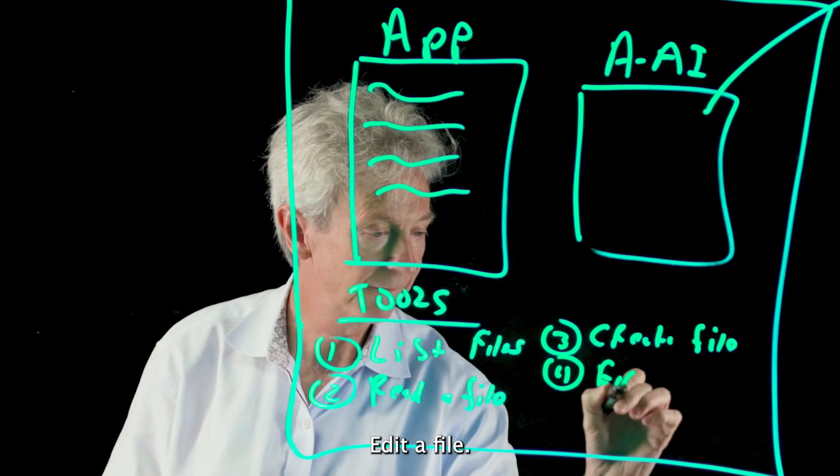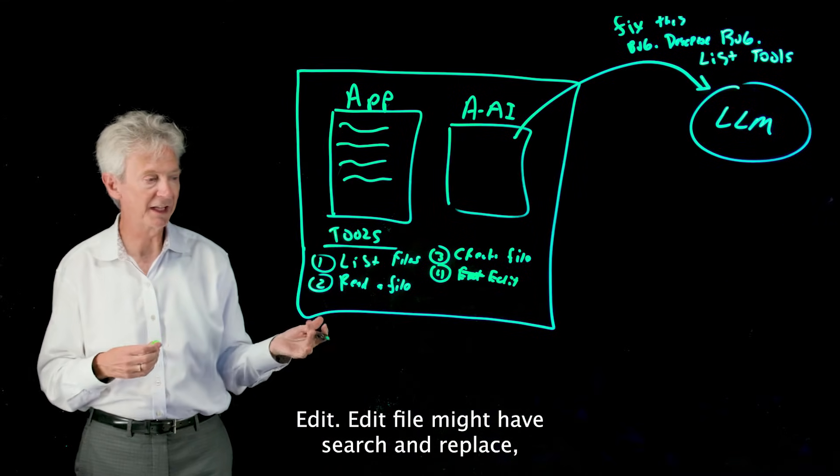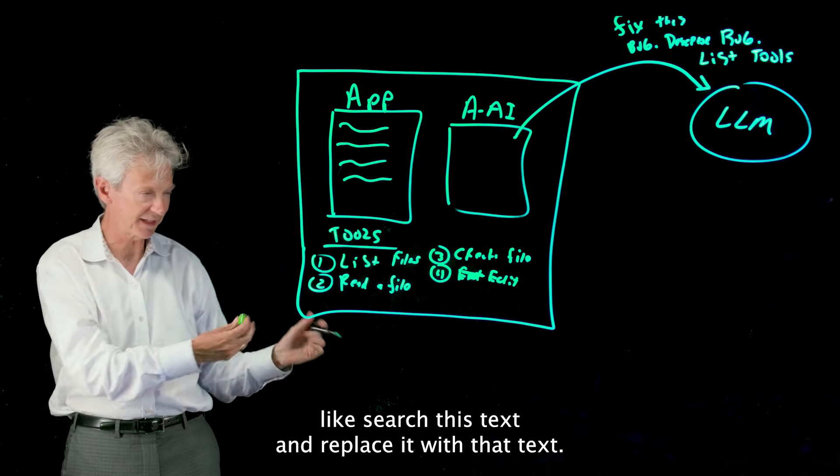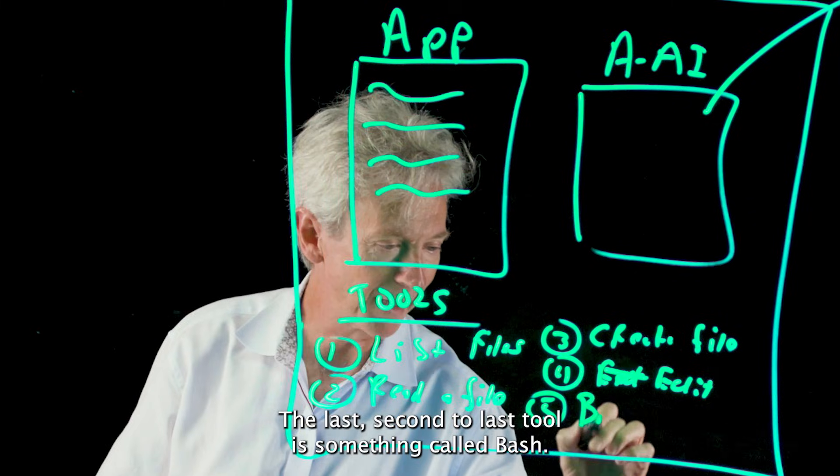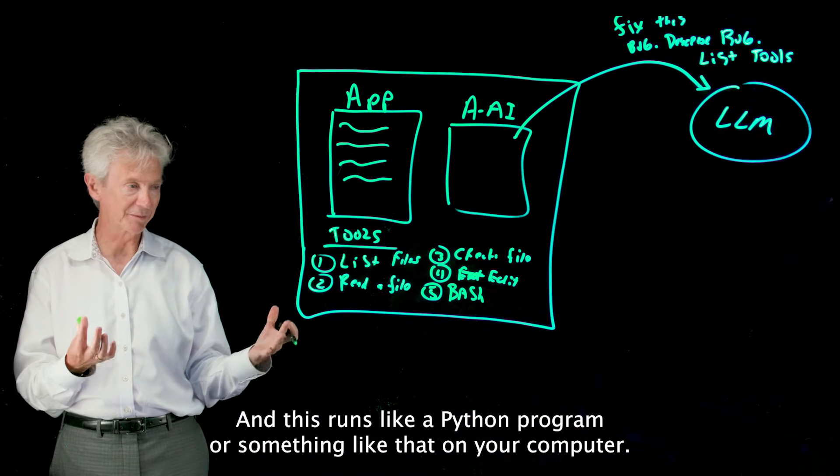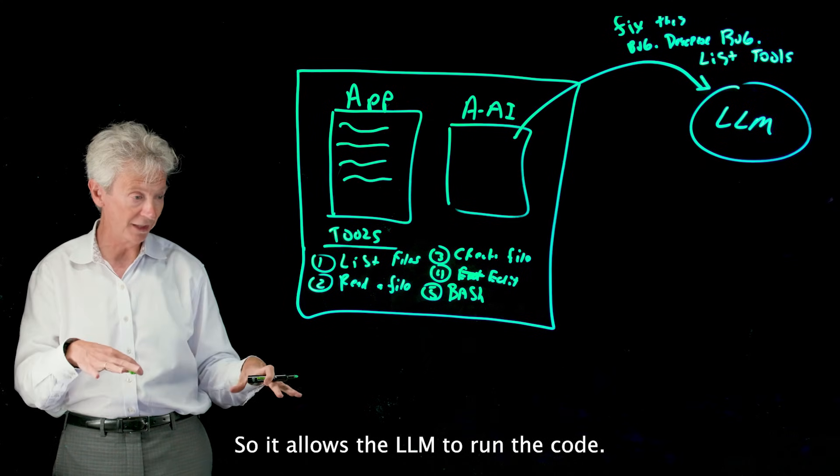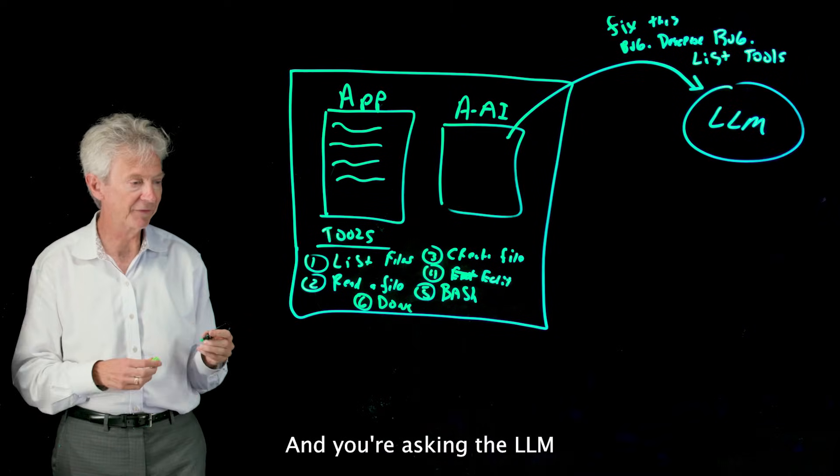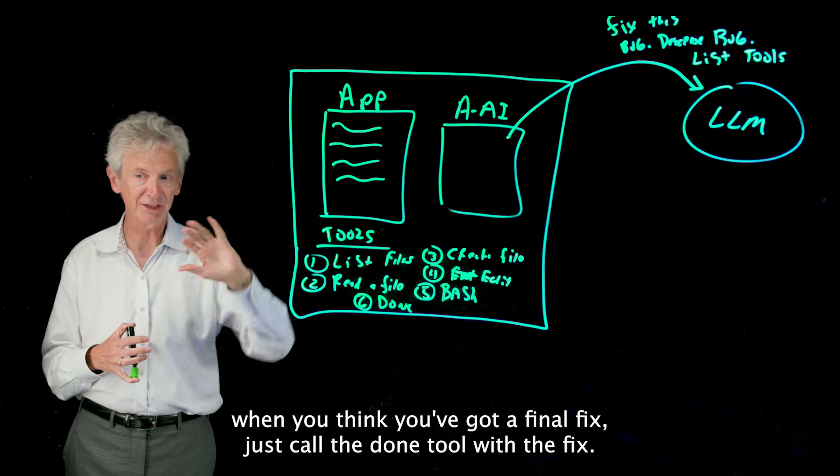Edit a file—edit file might have a search and replace like search this text and replace it with that text. The second to last tool is something called bash, and this runs like a Python program or something like that on your computer. So it allows the LLM to run the code. And then the last tool is just something called done, and you're asking the LLM when you think you've got a final fix, just call the done tool with the fix.